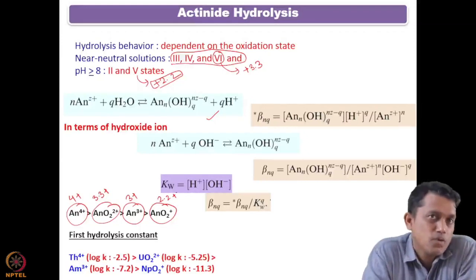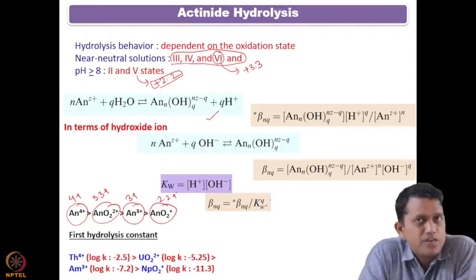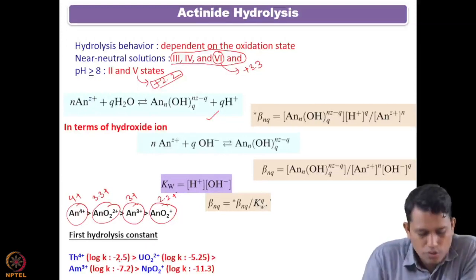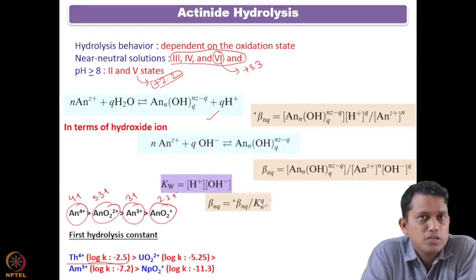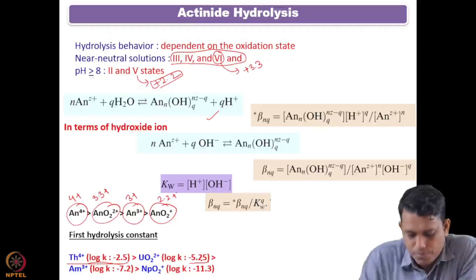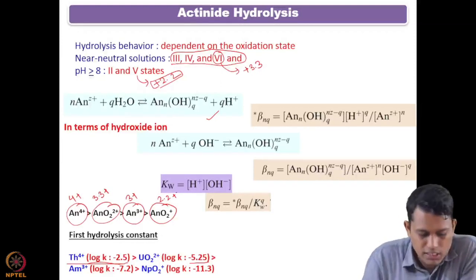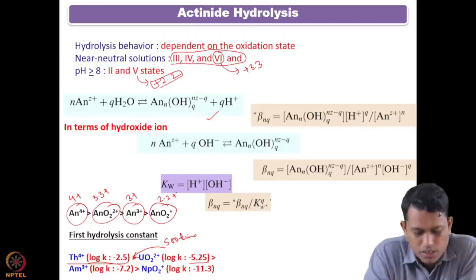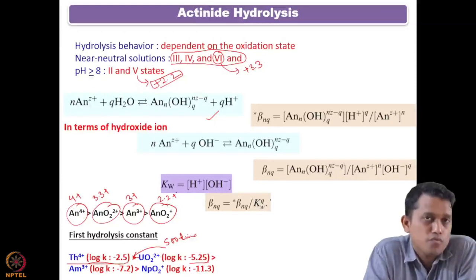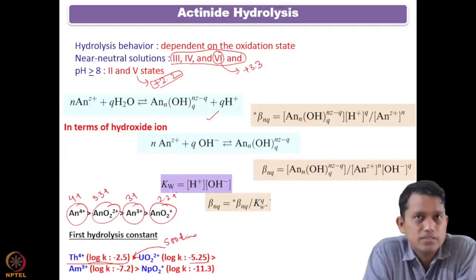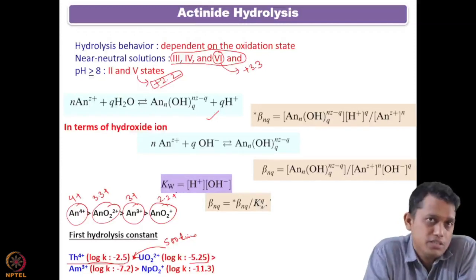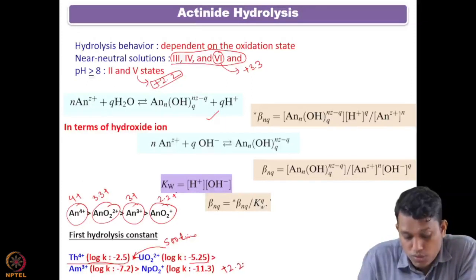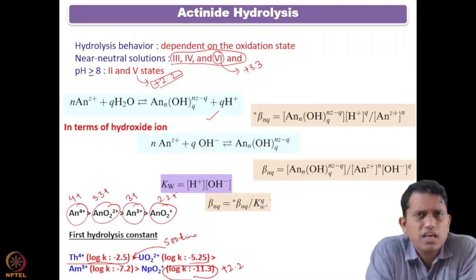Comparing the first hydrolysis constant across different oxidation states for different actinides — thorium and uranium — if you compare thorium, the K value is 10 to the power minus 2.5, and for uranium, it is 10 to the power minus 5.5. So thorium has a higher tendency to get hydrolyzed compared to uranium. When you compare uranium and americium, uranium has almost 100 times more tendency of hydrolysis because of its higher charge — 3.3 compared to 3 in americium.